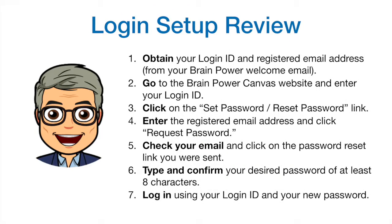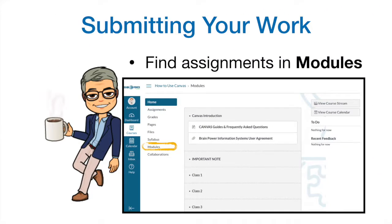So to review: 1. Obtain your login ID and registered email address from the email we send to you and/or your parents. 2. Go to the BrainPower Canvas website and enter your login ID. 3. Click on the Set Password / Reset Link. 4. Enter the registered email address and click Request Password. 5. Check your email and click on the password reset link you were sent. 6. Type and confirm your desired password of at least eight characters. 7. Log in using your login ID and your new password.